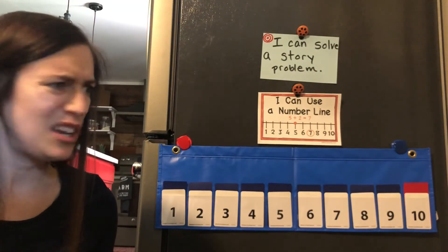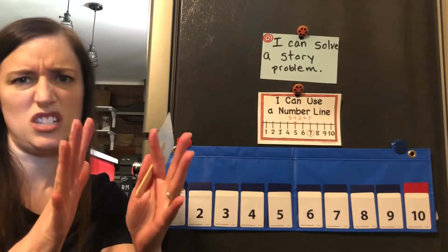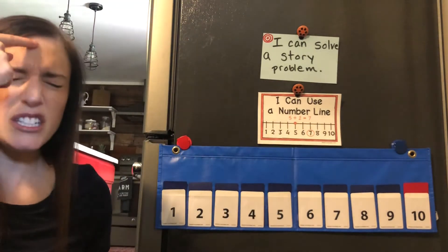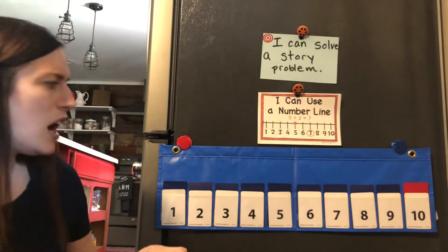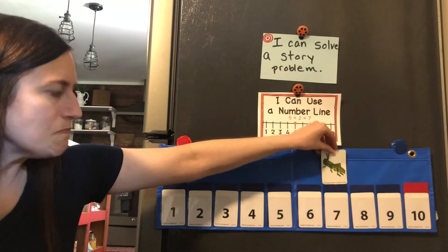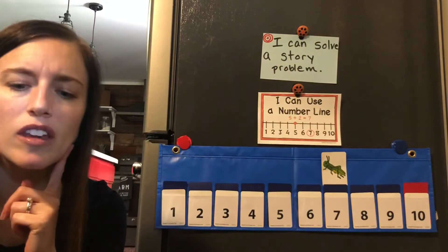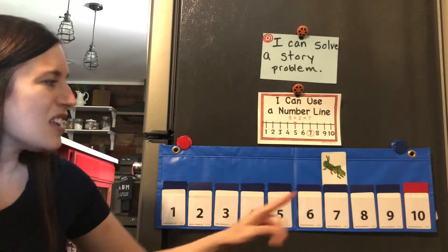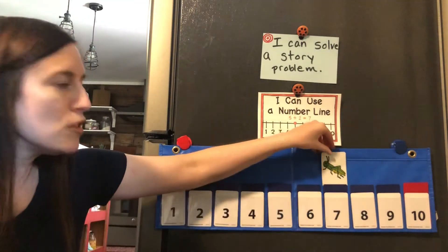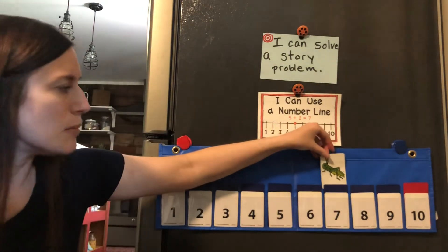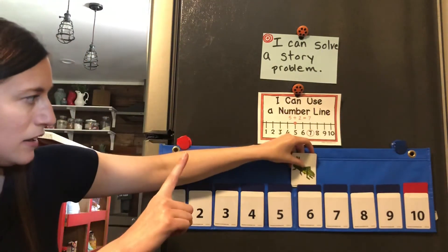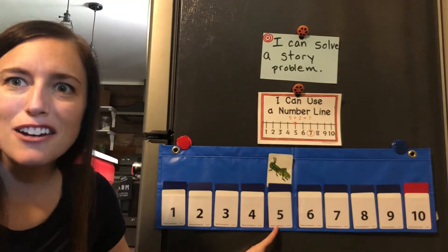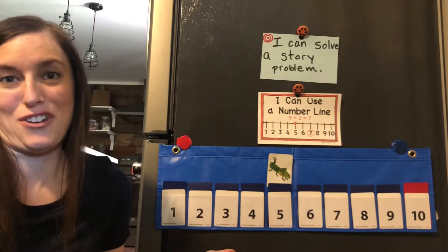Now, this one's different because we're not putting two numbers together. We're taking them apart. So, first Max saw seven cats. So, I'm going to put Hopper right on that seven. Okay, then two of the cats ran away. Okay, that means my numbers are going to get smaller. So, I'm going to move him back two jumps. One, two. He landed on five. There must be five cats left over.